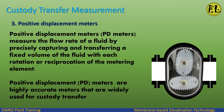Positive Displacement Meters (PD meters) measure the flow rate of a fluid by precisely capturing and transferring a fixed volume of the fluid with each rotation or reciprocation of the metering element. PD Meters are highly accurate and are widely used for custody transfer.